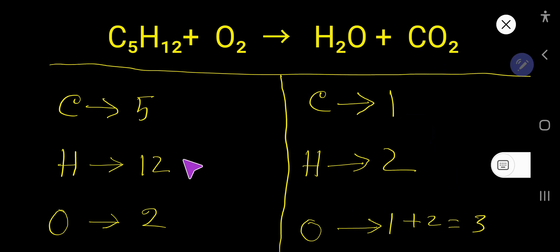Now we have to balance here 5 carbon, here 1 carbon. So to balance carbon, I can multiply here by 5, that gives us 5.